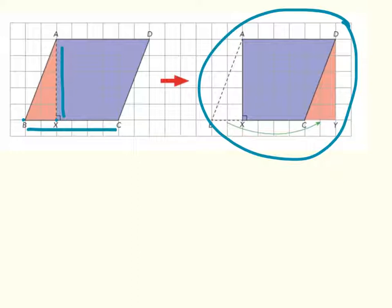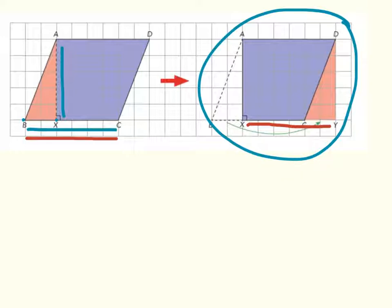The tricky piece here is identifying the base and the height of your parallelogram. Any side can be considered the base, and the height is perpendicular from the opposite side of the base — almost exactly like finding the height of a triangle, where the height is perpendicular to the base and passes through an opposite vertex. Notice that XY has the same length as the base BC in our parallelogram.